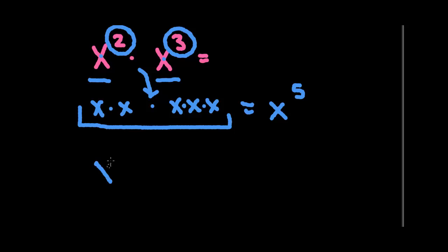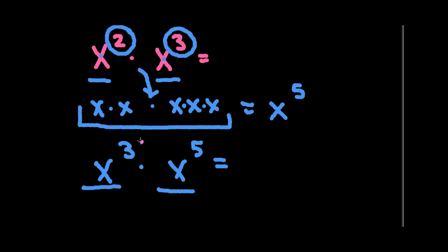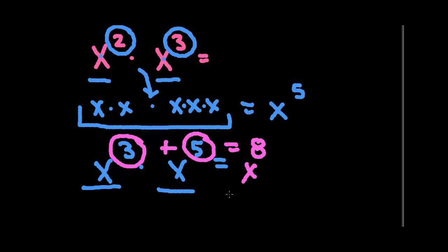The shortcut is: if you have two values with the same base sitting next to each other, you can just add the exponents rather than writing it all out. For instance, x to the third times x to the fifth would be x to the eighth, because 3 plus 5 equals 8.